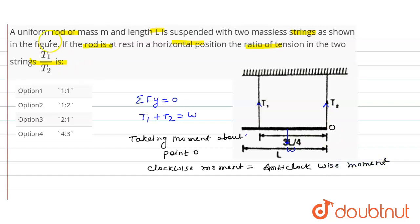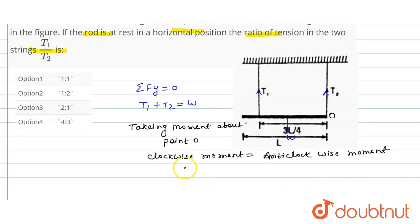So here see, clockwise moment is equal to T1 into length 3L/4.